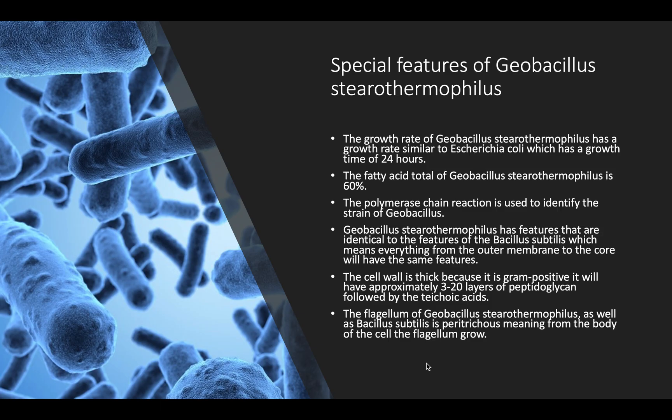The special features of Geobacillus stearothermophilus: as described before, the growth rate is similar to that of Escherichia coli — approximately 300 bacteria in less than 24 hours. The fatty acid total of Geobacillus stearothermophilus is 60%, and it can further be identified by strain using the polymerase chain reaction.